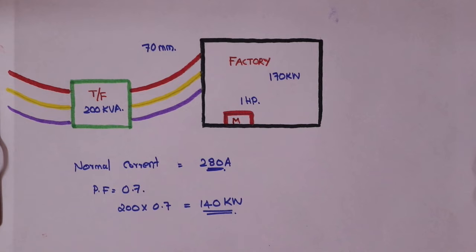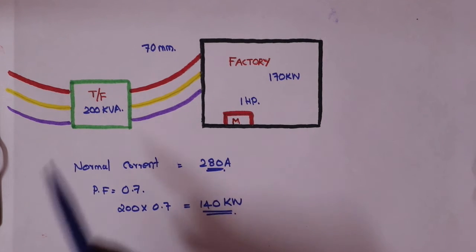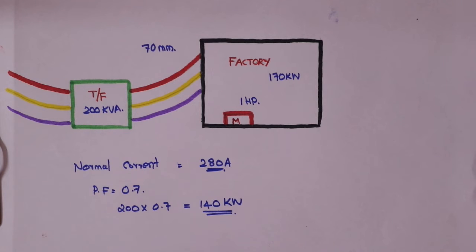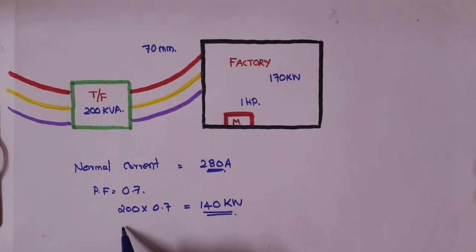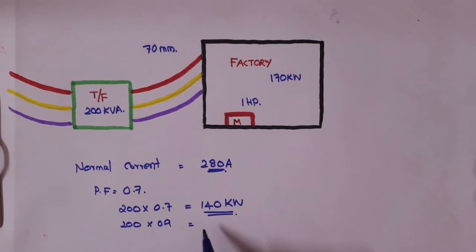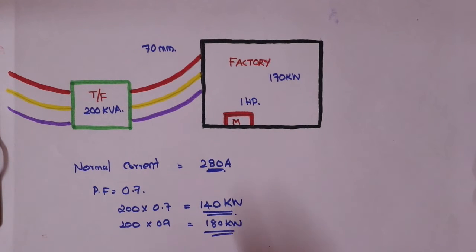Now, the power factor total for me is 0.5. So I have to convert this. I can use 200 × 0.9 which is equal to 180 kilowatts. Then with power factor 0.7, I have a transformer with 200 kVA. I have a lot of work.